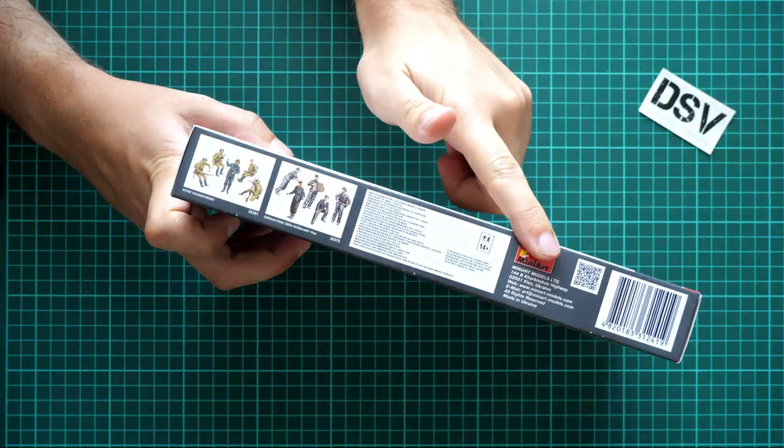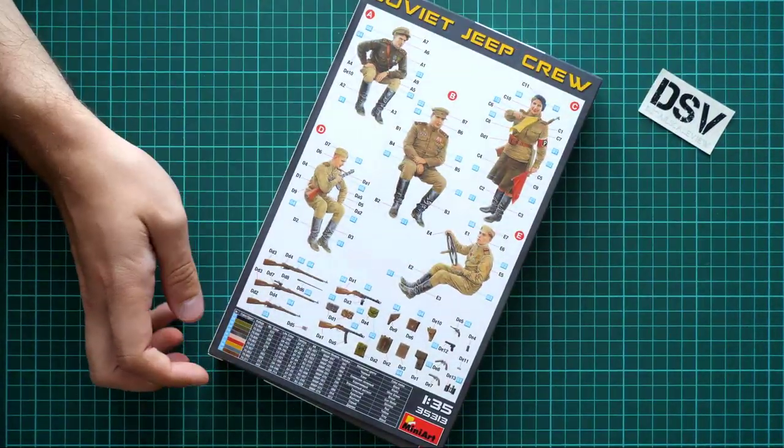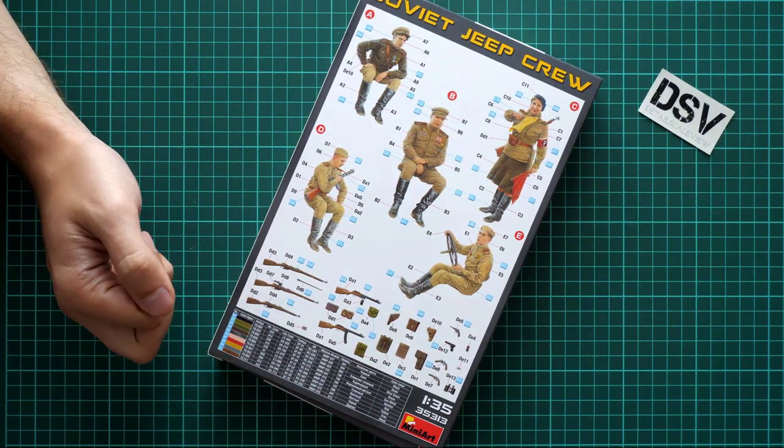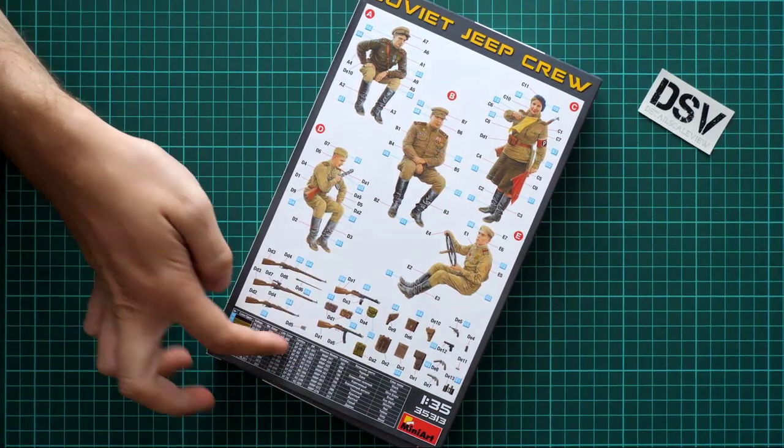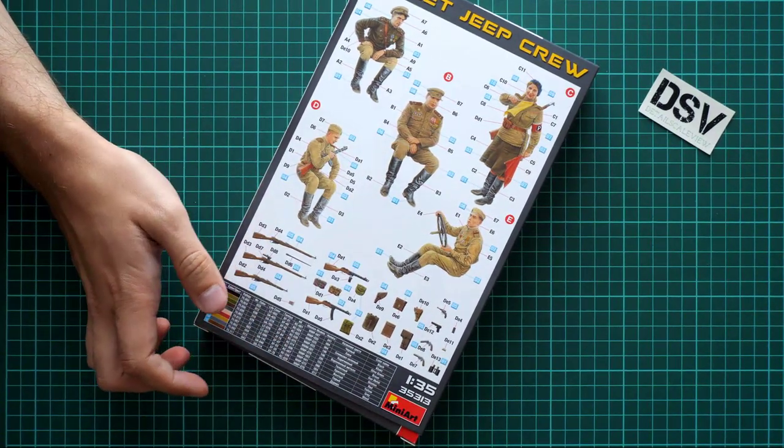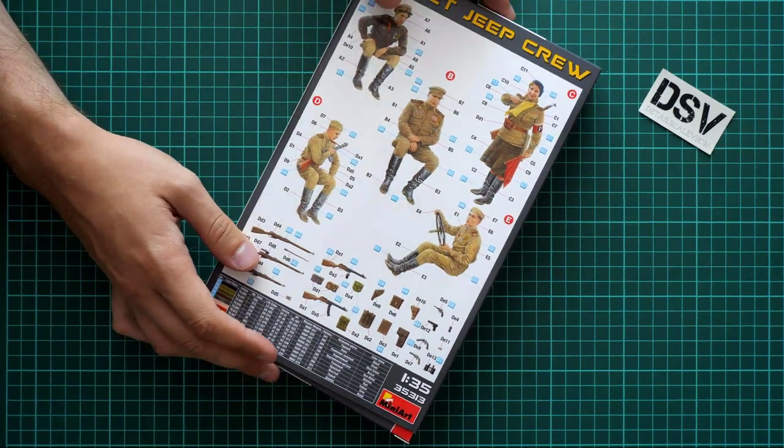On the rear side we have a marking guide printed in color, which is really cool because it makes it easier to understand how to paint the figurines and accessories. There's also a paint chart with several manufacturer designations, so you should be able to pick the one suitable for your paint collection.